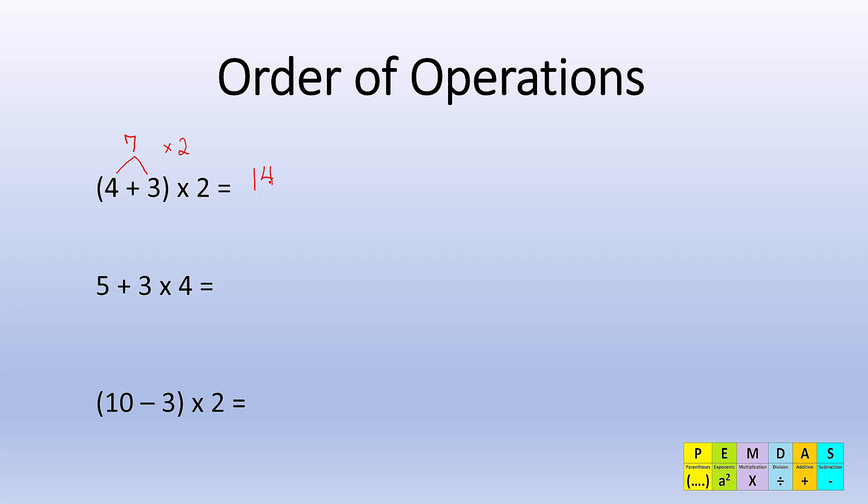Now let's look at the second one. Here I don't have any parentheses, but I know that multiplication would get solved before addition. So here I do 3 times 4 and it gives me 12, and then 12 plus 5 would give me 17.